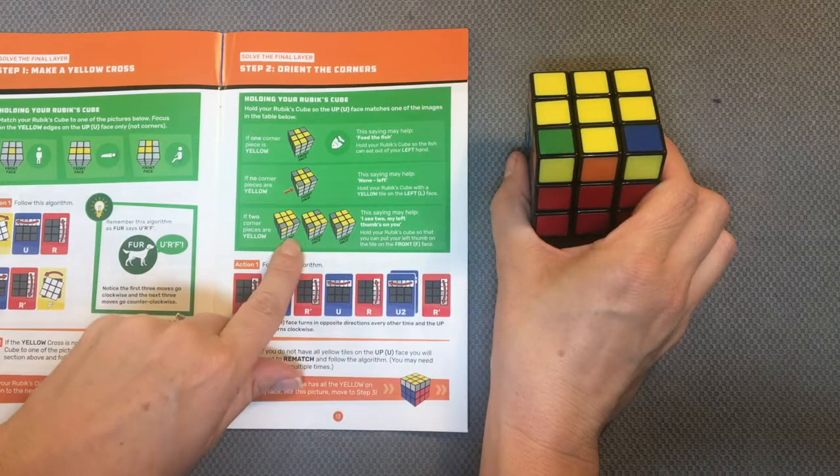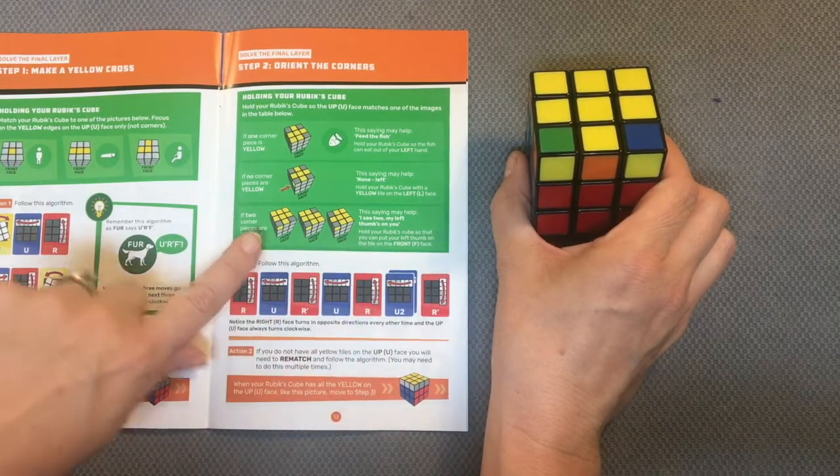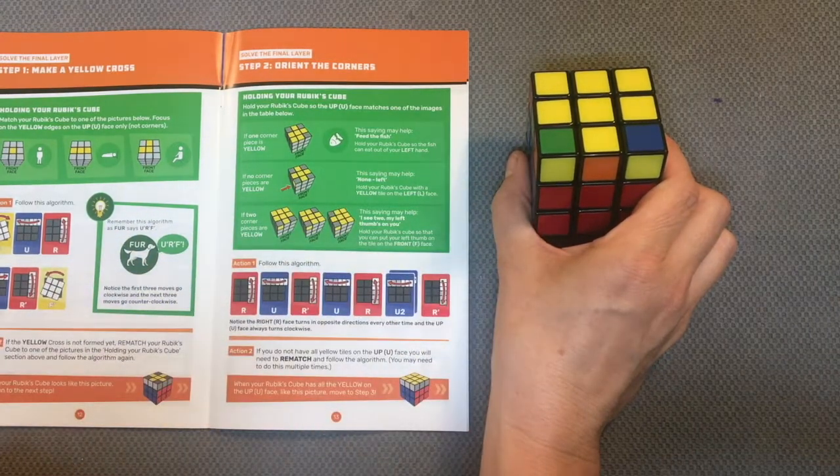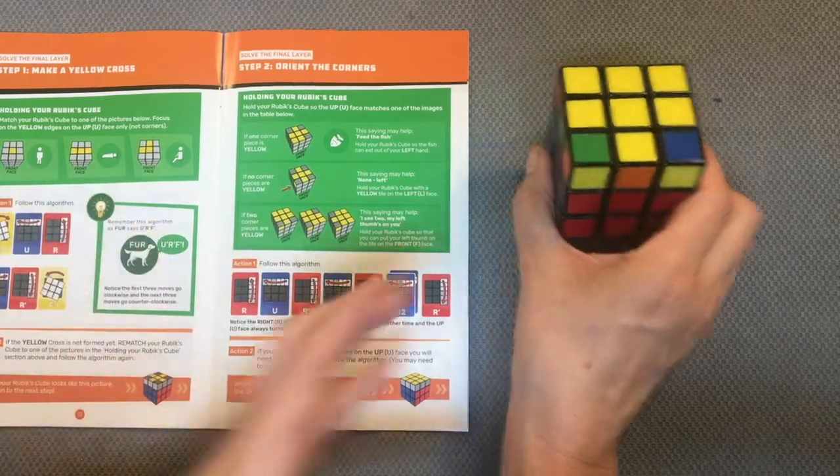Whenever you see the gray in the solution guide, it means it could be any of the colors or we don't need to worry about it. What's key is to make sure that this yellow is in this location and it is. So I can now come down here and follow this algorithm.